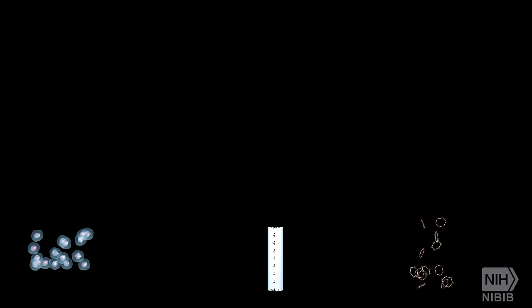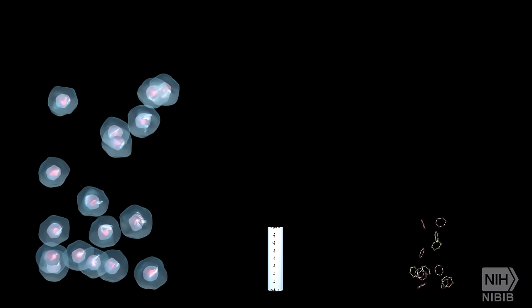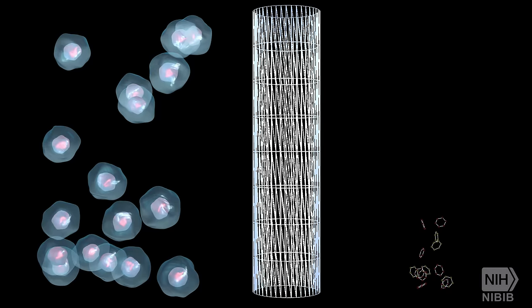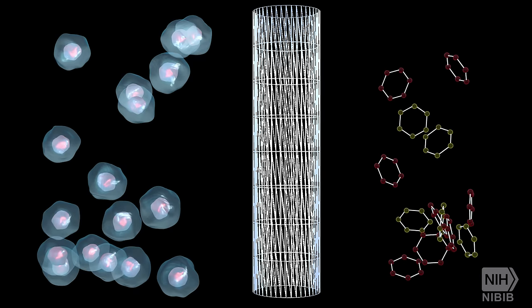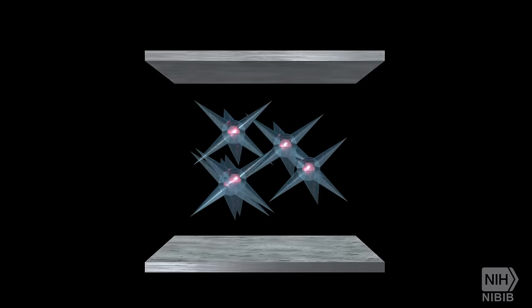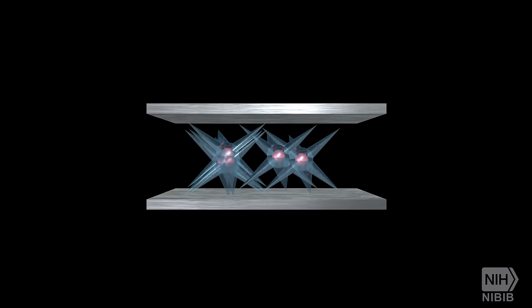Tissue engineering relies on four important factors: the right cells to do the job, the right environment such as a scaffold to support the cells, the right biomolecules like growth factors to make those cells healthy and productive, and physical and mechanical forces to influence the development of the cells.